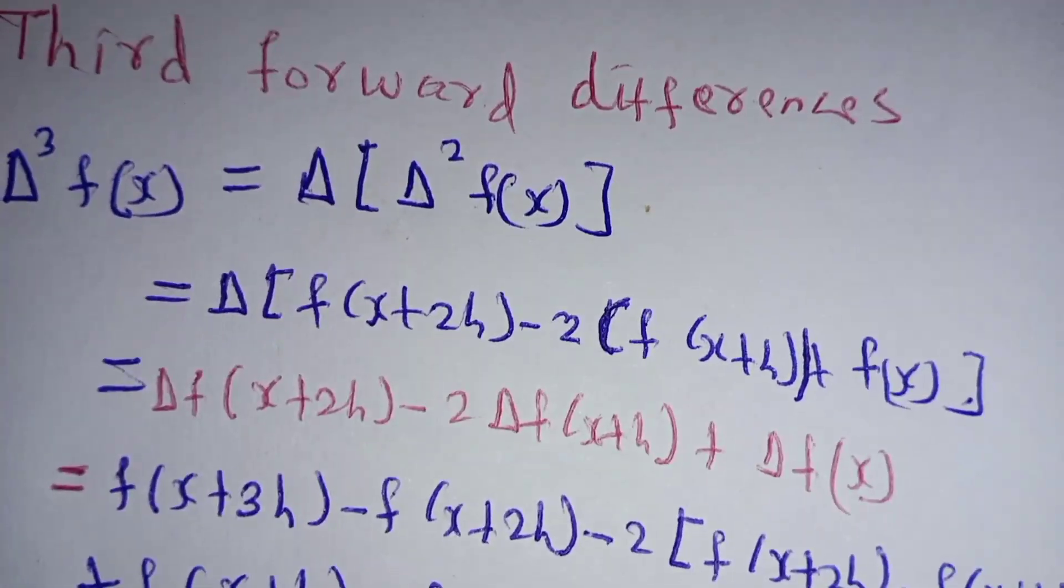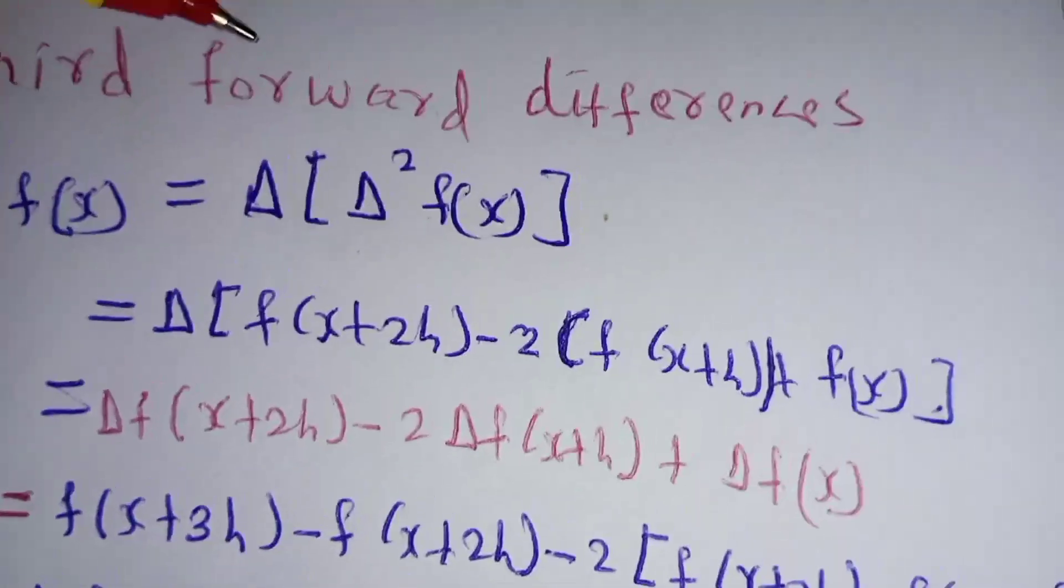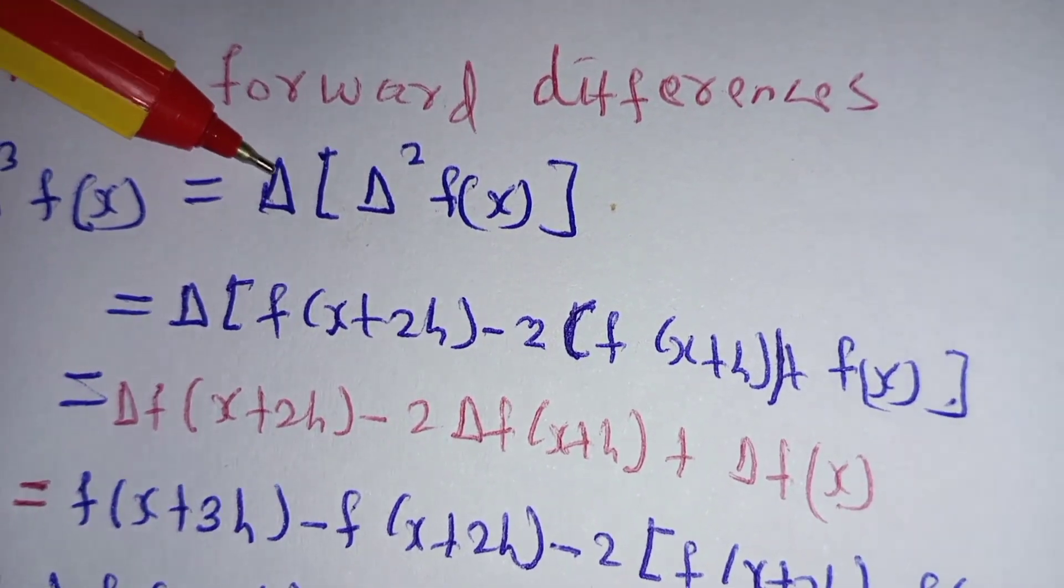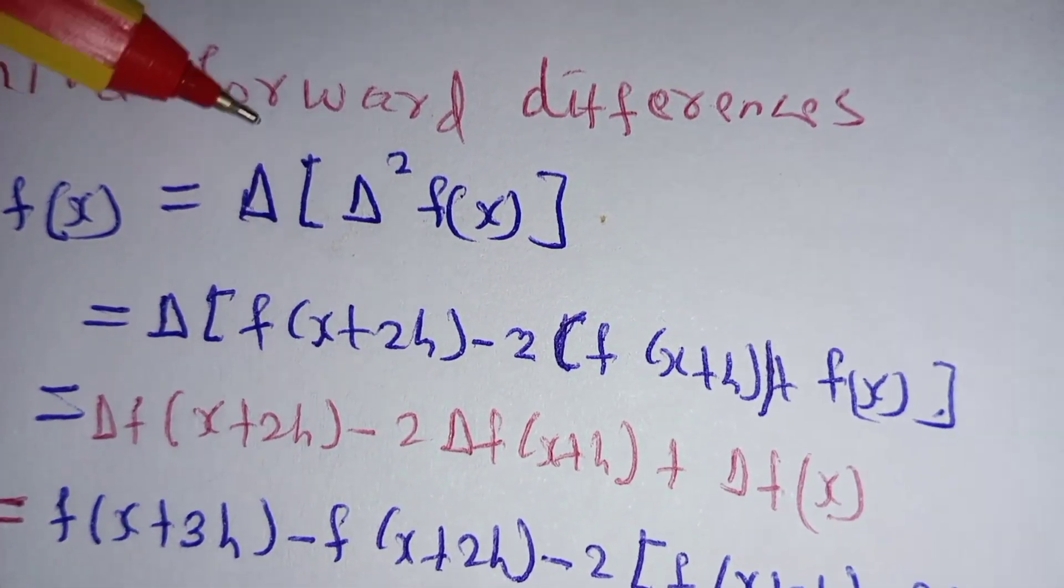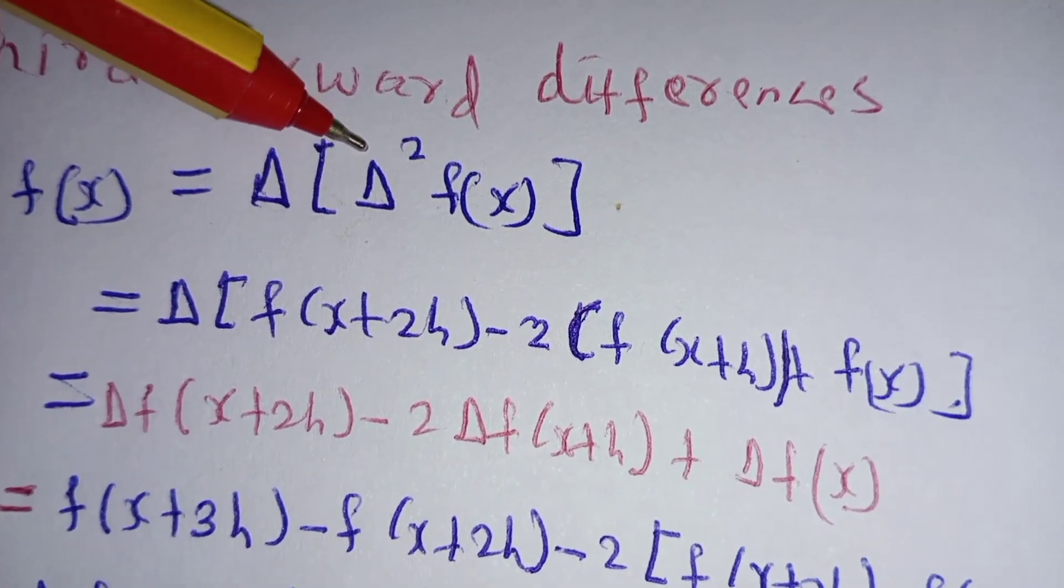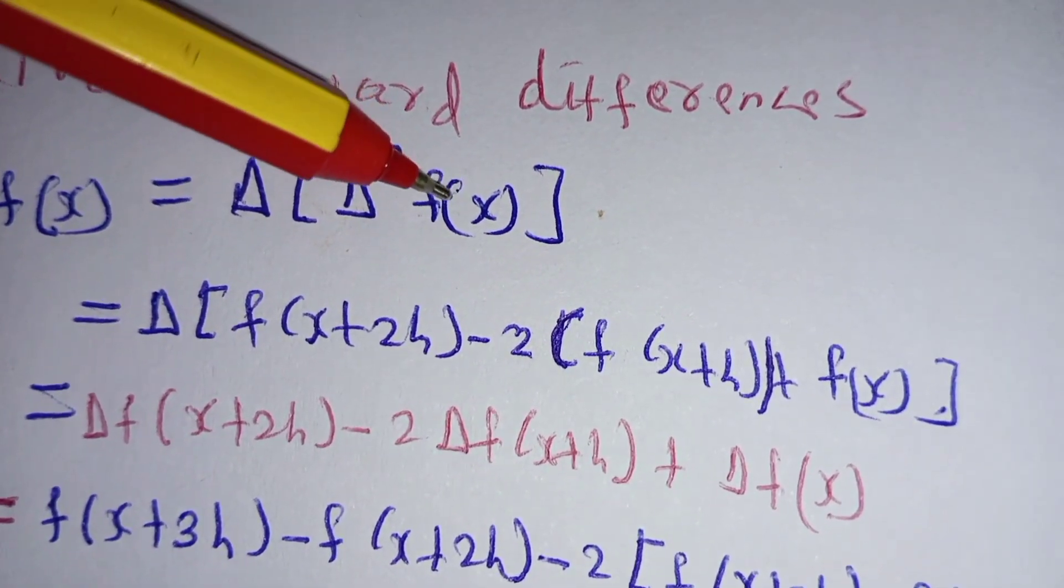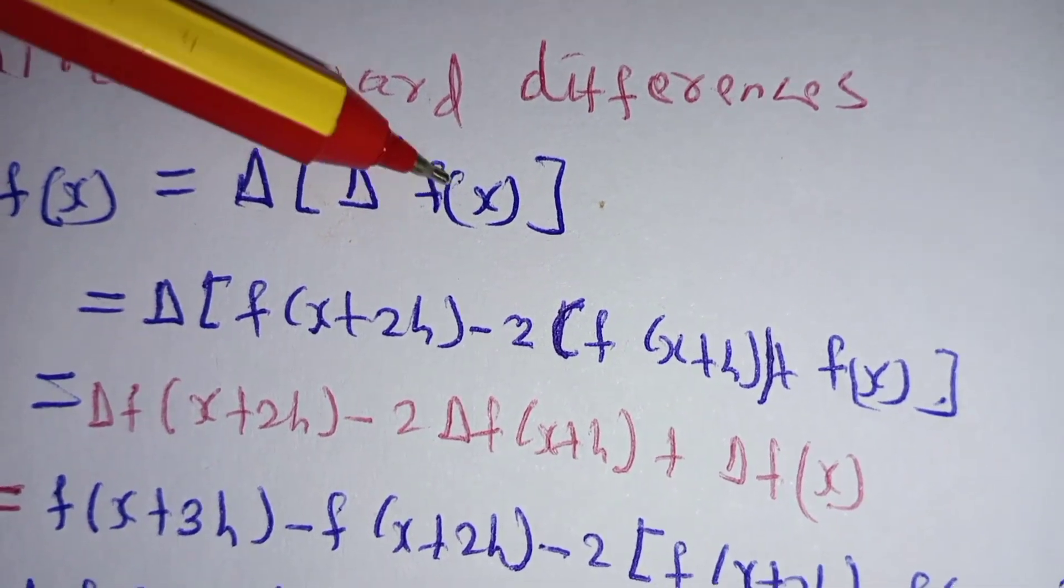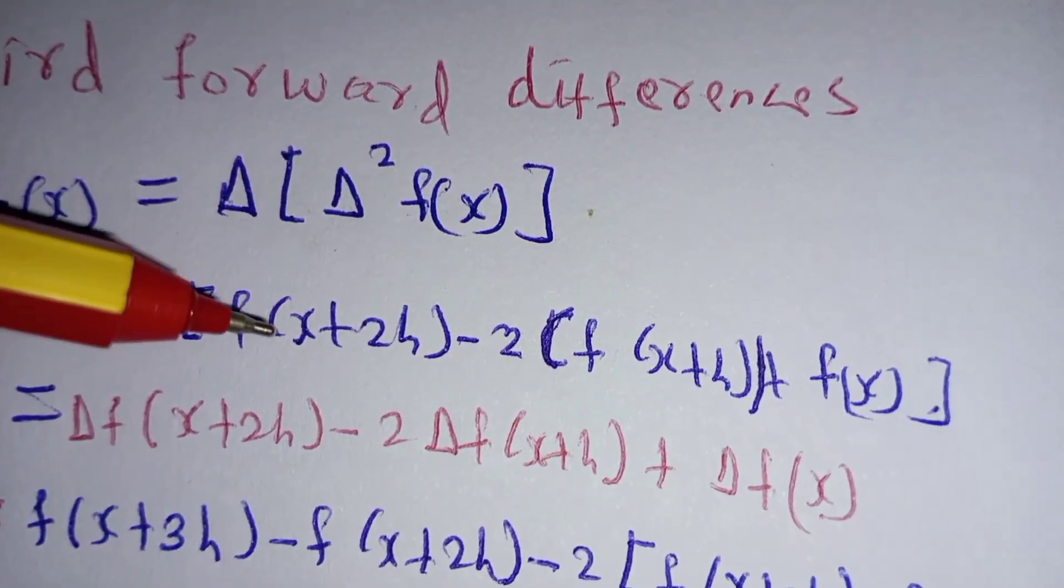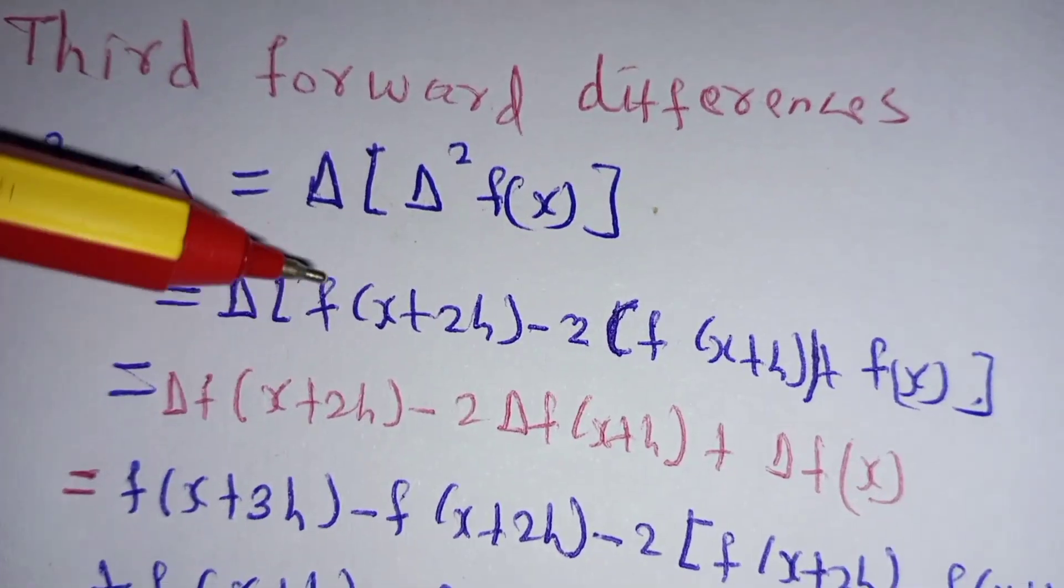The third forward difference can be written as the first difference of the second difference of function x, which is Δ[Δ²f(x)]. Now, the second derivative of function x is written as this: